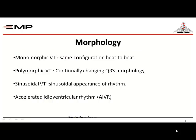Regarding morphology, we classify it as monomorphic or polymorphic based on the morphology of the QRS complex. If all QRS beats have the same morphology, we call it monomorphic VT — same configuration throughout. If there is a continuous change in the morphology of the QRS, that is polymorphic VT — continuously changing QRS morphology.